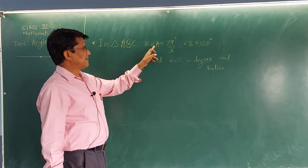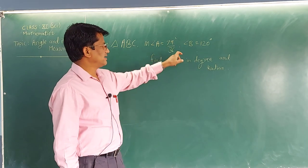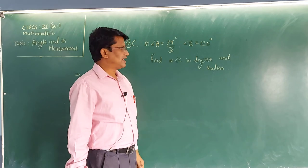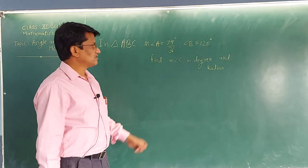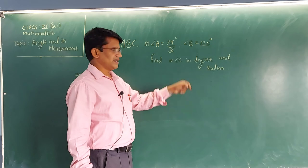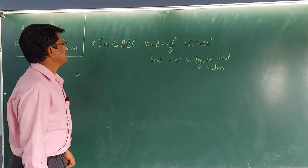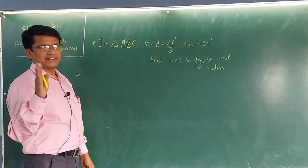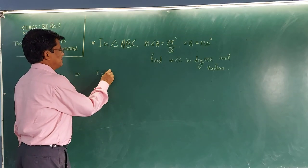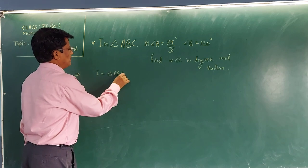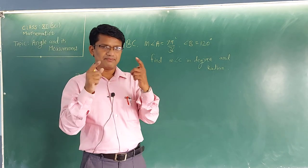In triangle ABC, measure of angle A is 7π/36 radian and angle B equals 120 degrees, and we have to find the third angle, angle C, in both systems — degree and radian. No need to draw a diagram here.